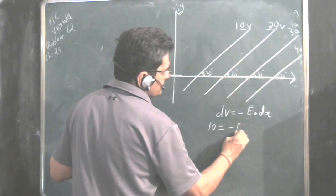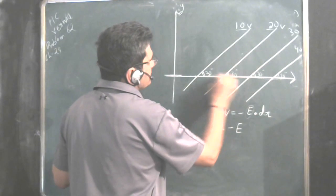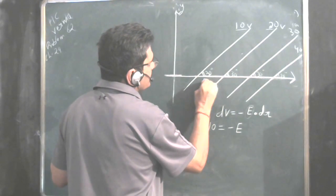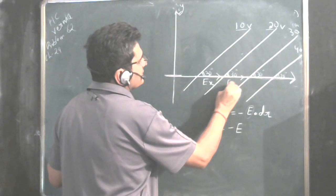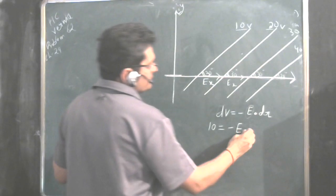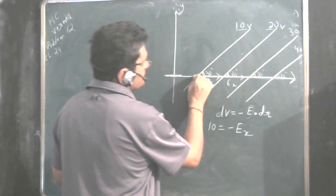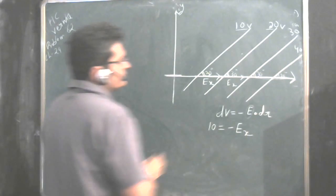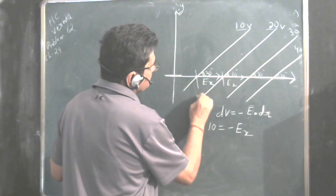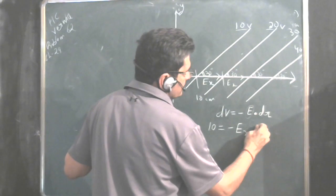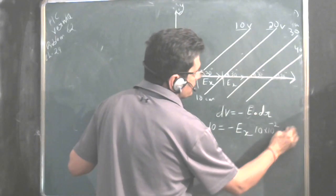So 10 equals minus, let's put E like that only, and let the direction of E be, take this as Ex, the component along x-axis. So Ex and dR are in the same direction, so cos 0, and dR is how much? This is given as 10 cm each. So it is 10 into 10 to the power minus 2 into cos 0.